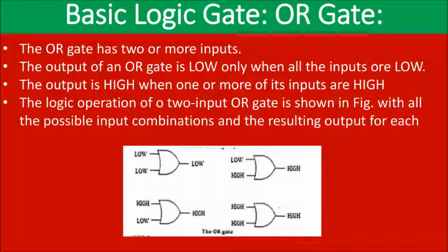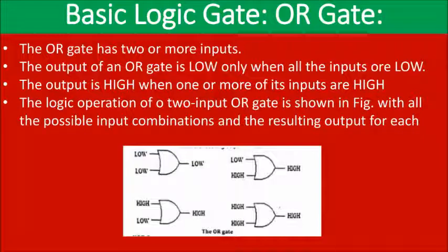The OR gate has two or more inputs. The output of an OR gate is low only when all the inputs are low; otherwise the output is high. The logic operation of a two-input OR gate: if both inputs are low then the output is low; if any input is high, the output will be high.